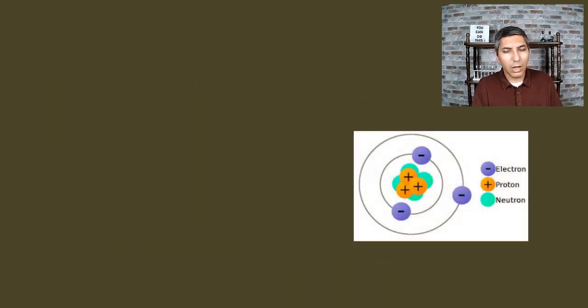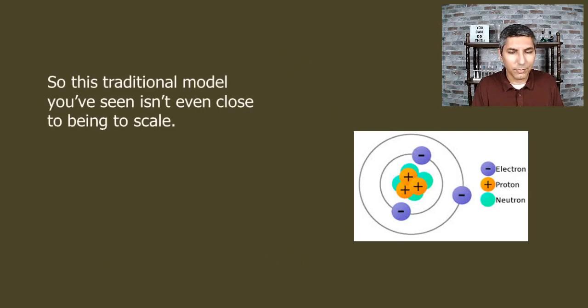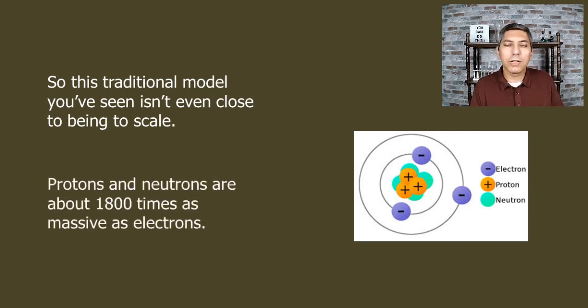Now let's talk about the relative sizes of the protons and neutrons. Like we said, the model that you've seen, like we see in this picture, they're not really even close to being drawn to scale. Protons and neutrons are about 1,800 times as massive as electrons. Protons and neutrons are approximately the same size.